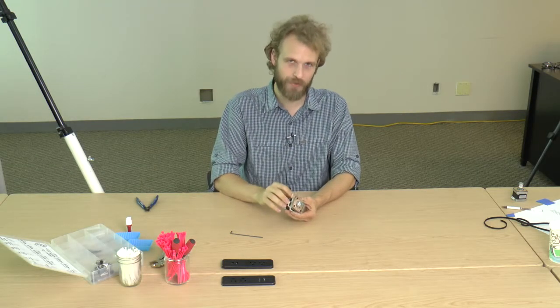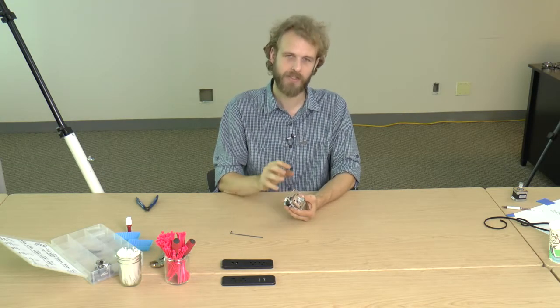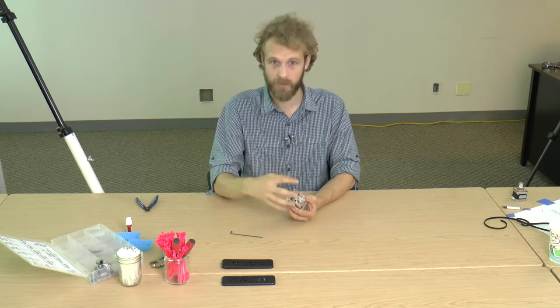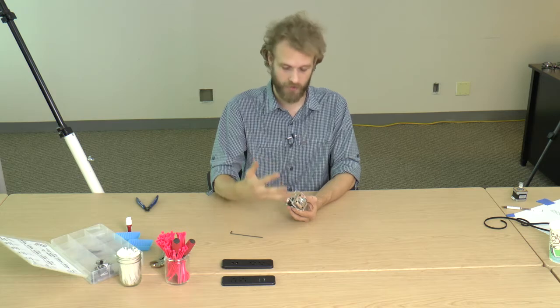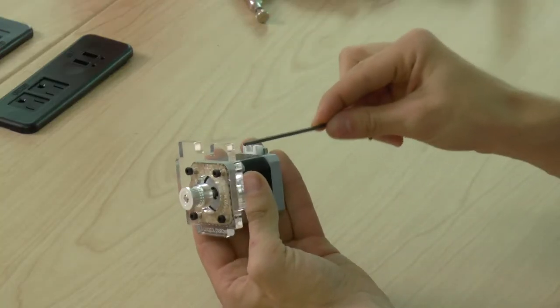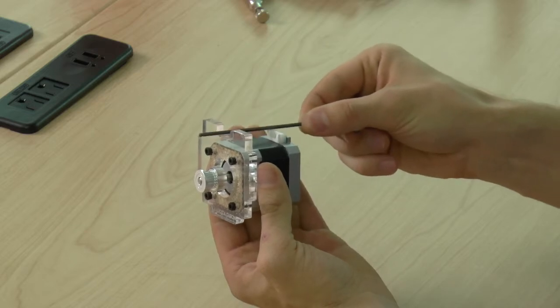We have to attach the Y motor to the so-called Y bracket so that we can then incorporate the Y bracket assembly into the frame of the jelly box itself. Notice that the Y motor connector is right against this notch.